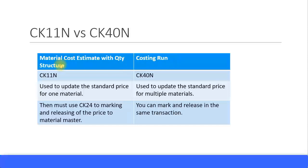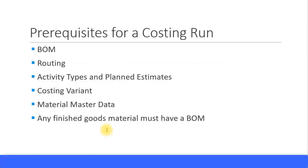The transaction for the cost estimate with quantity structure is CK11N, whereas for the costing run it is CK40N. The costing run is used to update the standard price for multiple materials, including all sub-level materials of finished goods. In the material cost estimate, it only analyzes the cost estimate — it does not mark or release the price to the material master. For that you must use transaction CK24, whereas in the costing run you can mark and release the cost estimates to the material master within the same transaction.